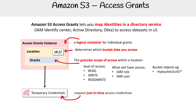Just understand that Amazon S3 access grants let you map identities in a directory service, and remember the terms Active Directory, Okta, identity service, and Microsoft Entra ID — which is the new name for Azure Active Directory. That's what this service is for.